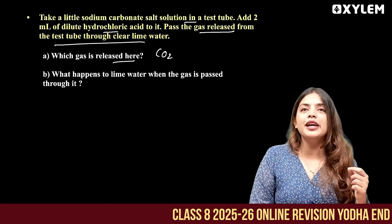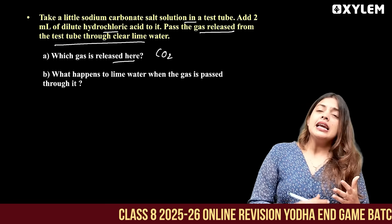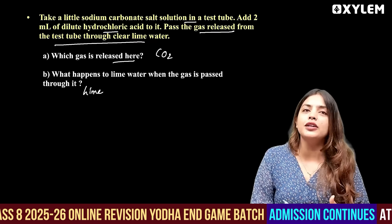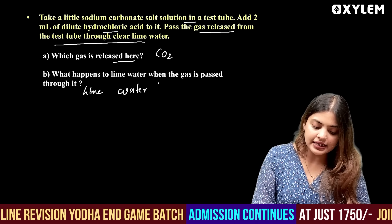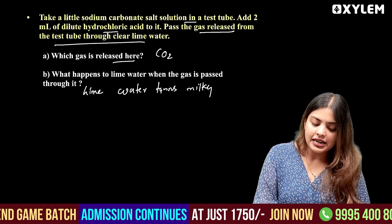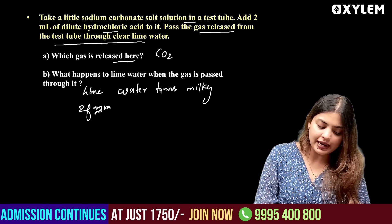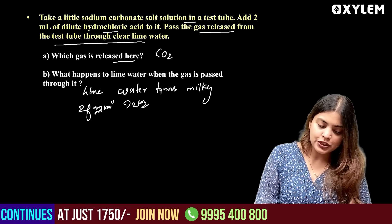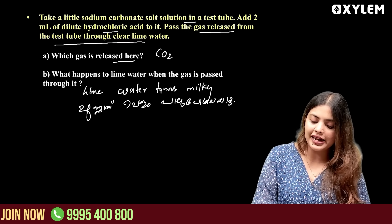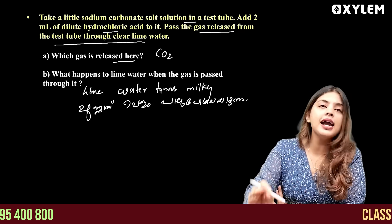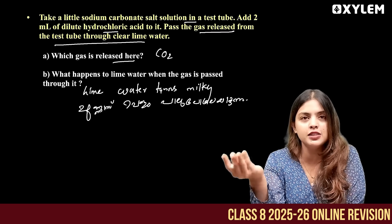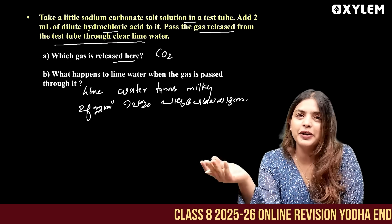CO2 — carbon dioxide — is the gas released. Lime water turns milky. The gas released is carbon dioxide, and it turns lime water milky.